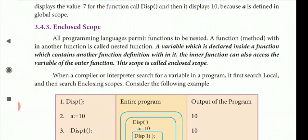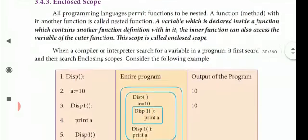So the enclosed scope definition: the inner function can also access the variable of the outer function. The compiler or interpreter searches for a variable in the program — first it searches local scope, and then it searches the enclosing scope.